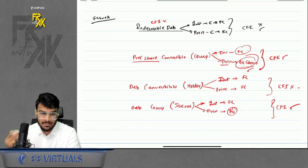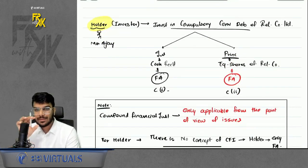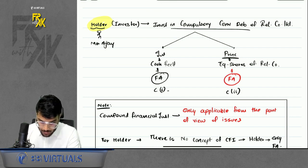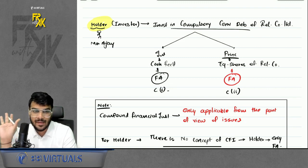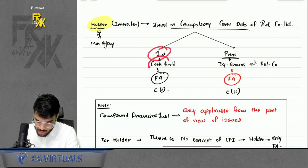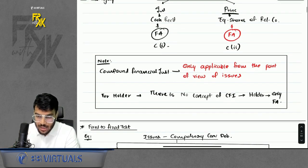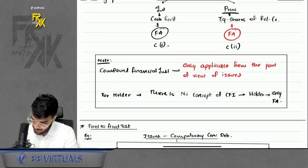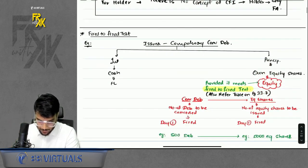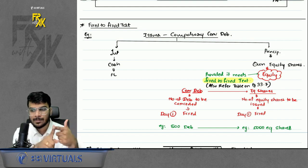Important conceptual point: the concept of CFI applies only from the point of view of the issuer. For the holder (investor), there is no concept of CFI. Whatever the holder receives — whether cash or equity shares of that company — it is always a financial asset for the holder.